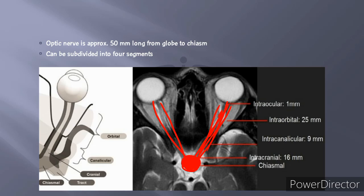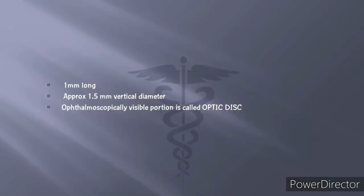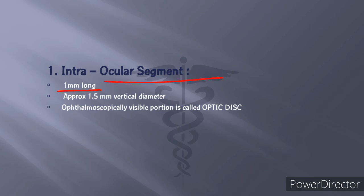The optic nerve is divided into anatomical subdivisions. The first is the intraocular part, which is 1 millimeter long with approximately 1.5 millimeter vertical diameter. This is the unmyelinated part — the portion of the optic nerve which is intraocular is unmyelinated. This is very important.